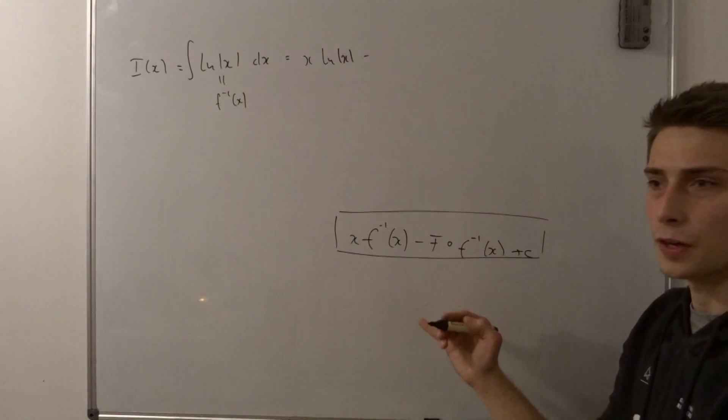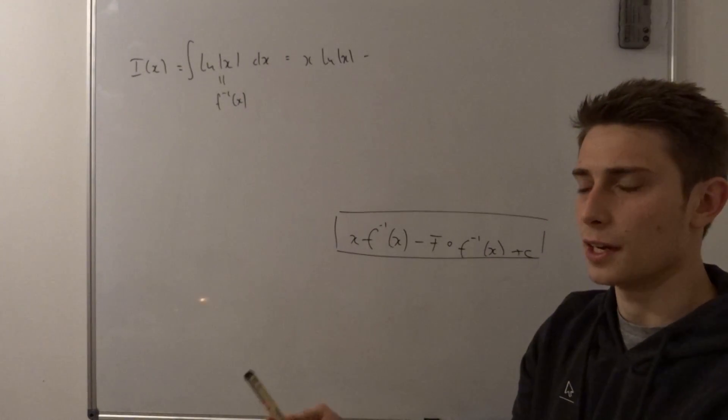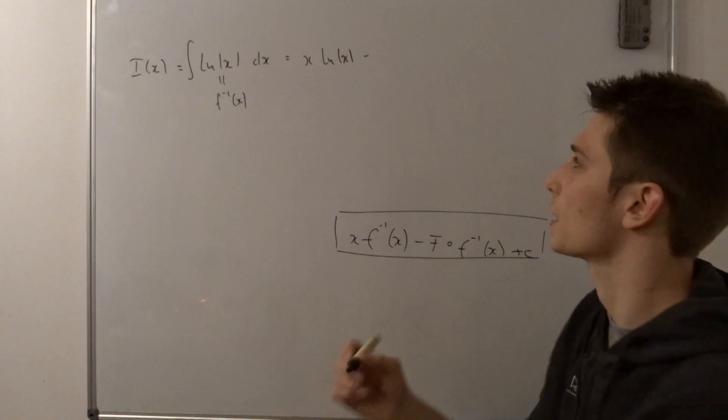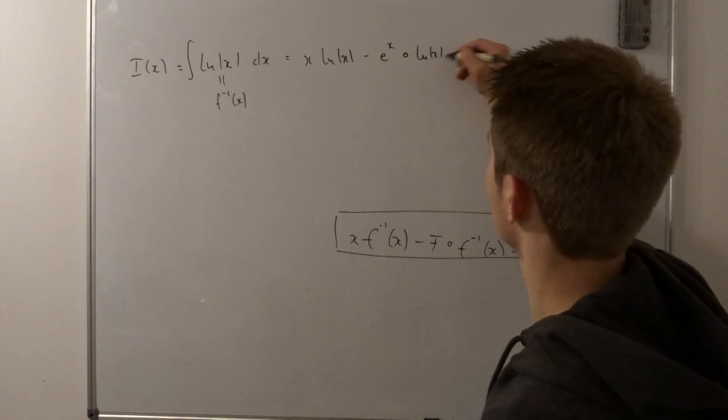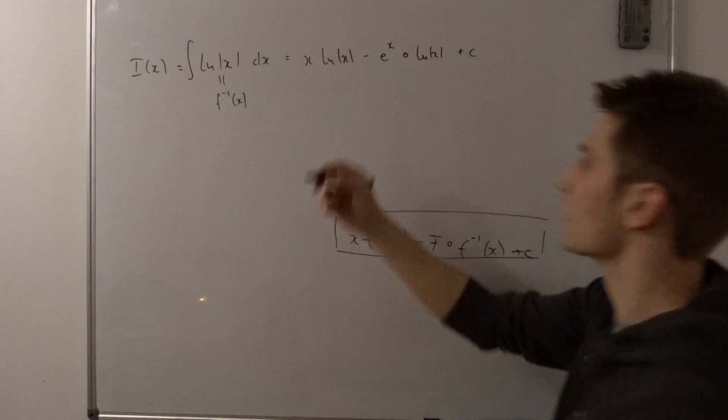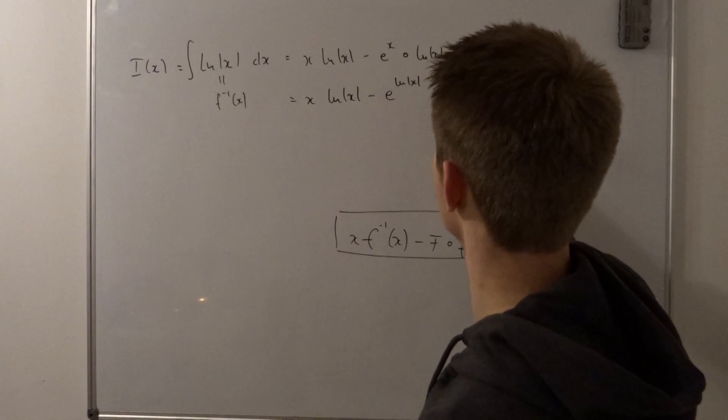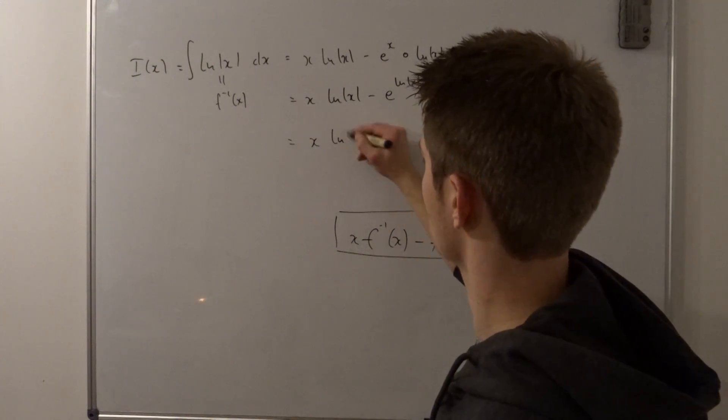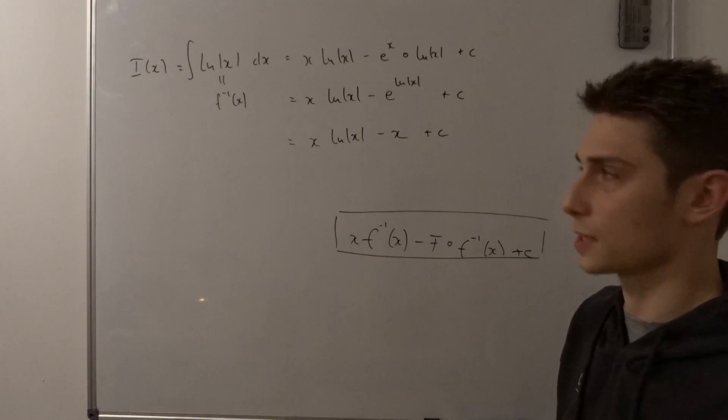Now we have the primitive of the inverse function of the inverse function. The inverse function of ln(x) equals e^x and the integral of e^x is just e^x. So that's e^x composed with our inverse function ln(x) plus an arbitrary constant c. And now we can plug this in, this ln(x) into the e^x. So we end up with x·ln(x) - e^(ln(x)) + c. But e^(ln(x)) is just x. So we end up with x·ln(x) - x + c. And that is indeed the correct answer for this integral.